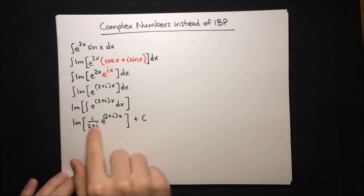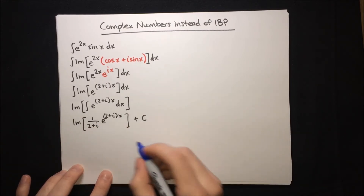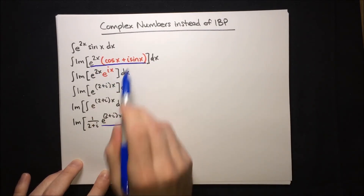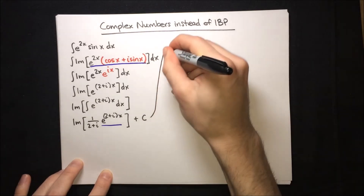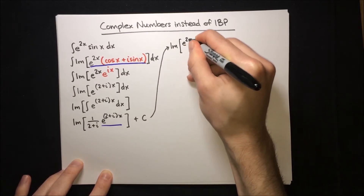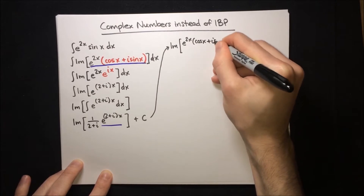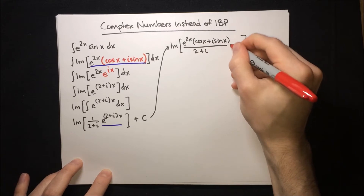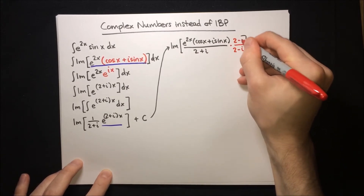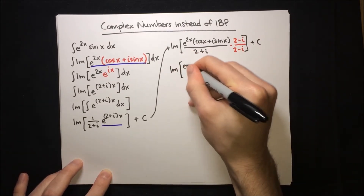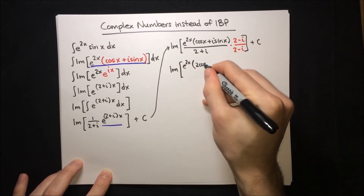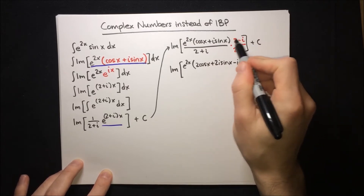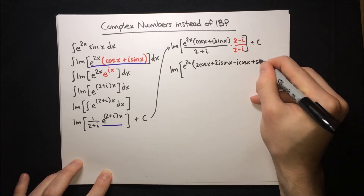So now we just need to simplify what's inside and take the imaginary part. To make simplifying a little bit faster, we're going to notice that this is the same expression we had earlier, so we can substitute it in. That gives us the imaginary part of e to the 2x times (cos x + i sin x), all over (2 + i), plus c. To simplify this, we're going to multiply by the conjugate (2 - i) on the top and the bottom. Multiplying through gives us 2 cos x + 2i sin x, minus i cos x, and then minus i² sin x — but that's minus of minus 1, so just plus sin x.